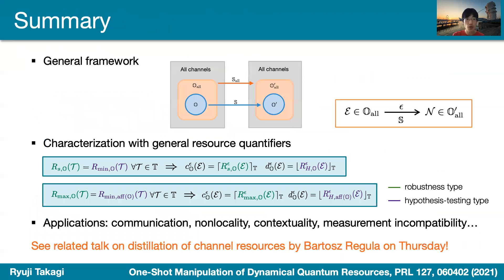In summary, we introduced this general framework and discussed the characterization of channel transmissions. The results are detailed in our manuscript, and we can apply them to many situations, including communication, non-locality, contextuality, and measurement incompatibility. There is also a related talk on our work about the distillation of channel resources by Bartosz on Thursday, so please take a look if you're interested. Thank you for your attention.